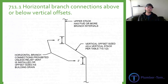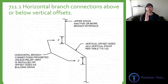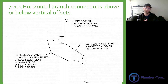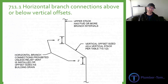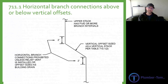7-11.1 talks about horizontal branch connections above or below vertical offsets on a stack. A stack is a vertical drain pipe. As it's coming down it needs to move over — this is called an offset. A vertical pipe is any pipe that is straight up or down to a 45-degree angle; that's still considered vertical. So if we offset that vertical stack with two 45-degree fittings it's considered a vertical offset. 7-11.1 says you cannot connect any horizontal branches within two feet above and two feet below that offset of the stack. The reason is that turbulence and movement of the fluids inside of that offset stack could interrupt the flow of a horizontal branch coming in.